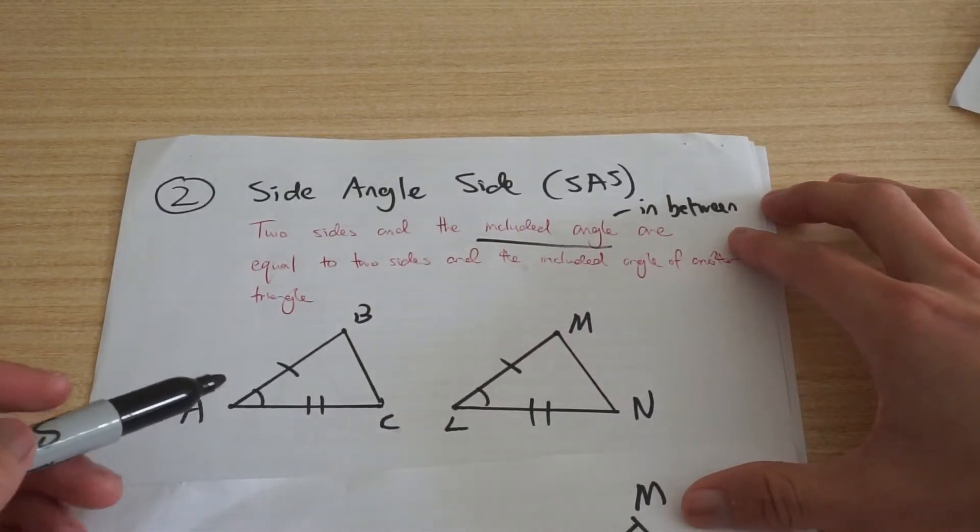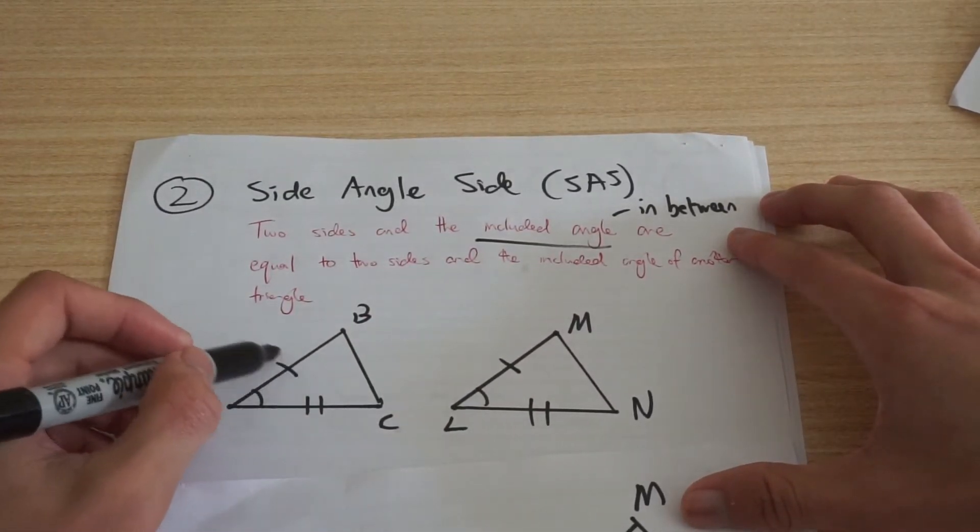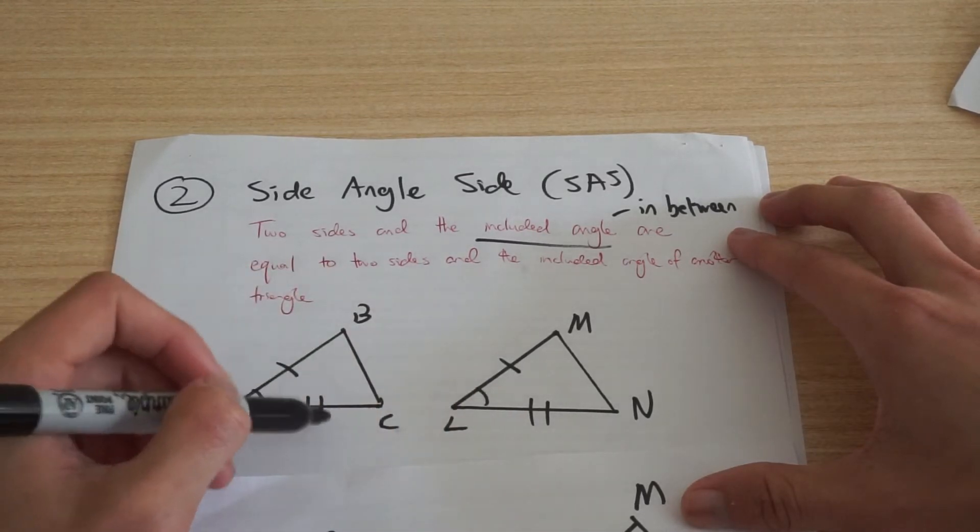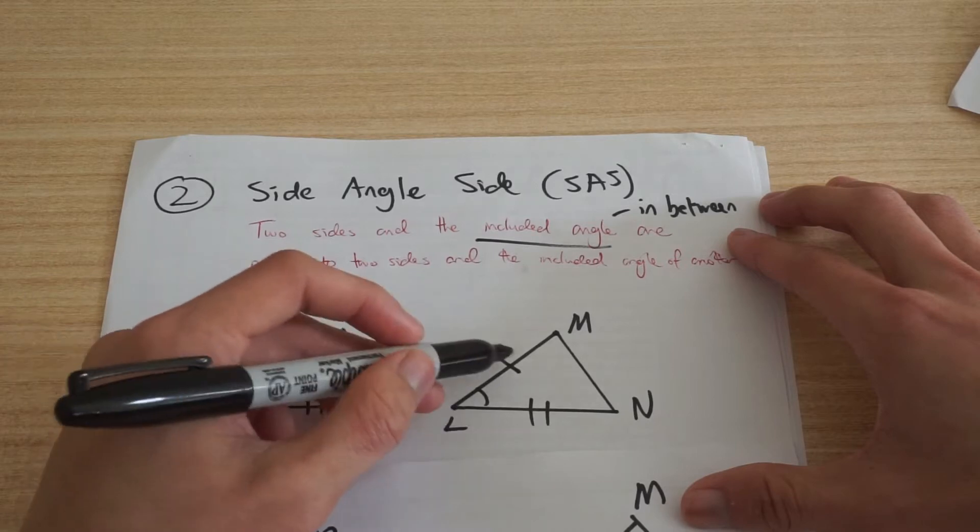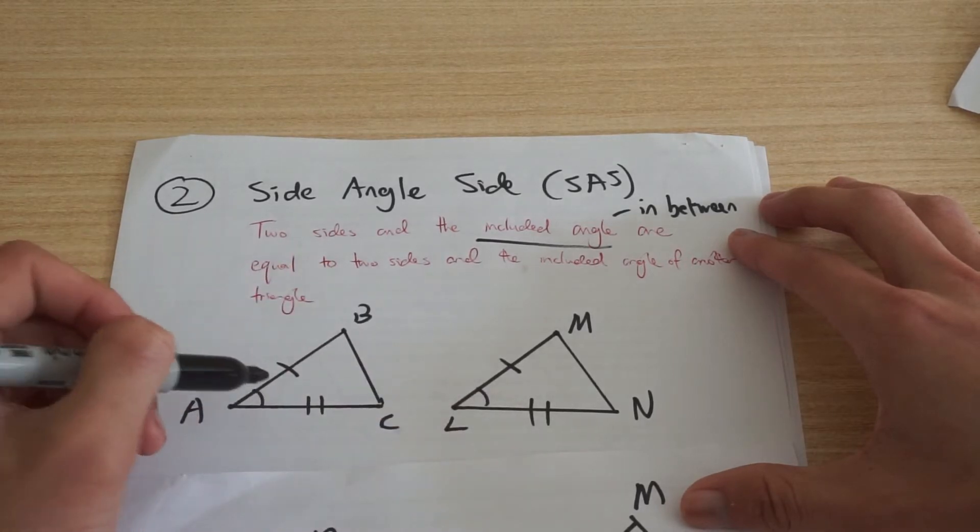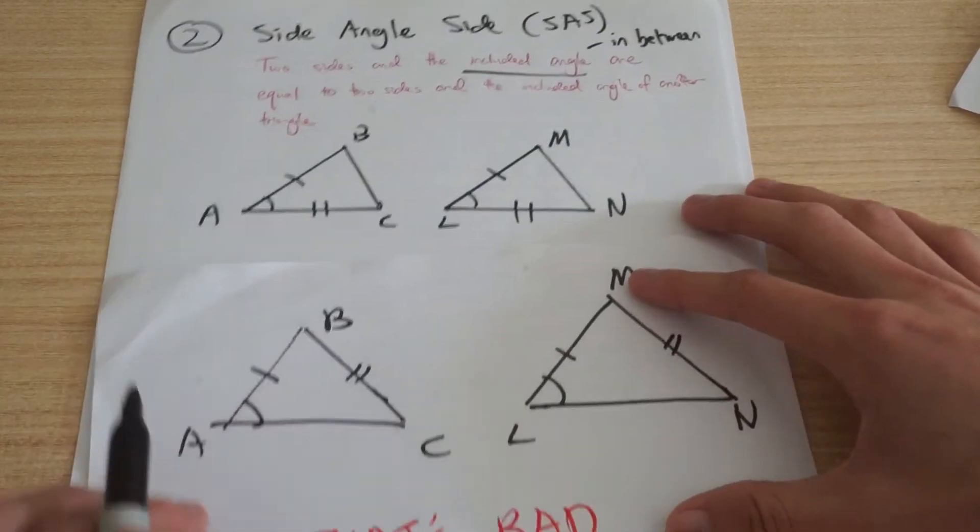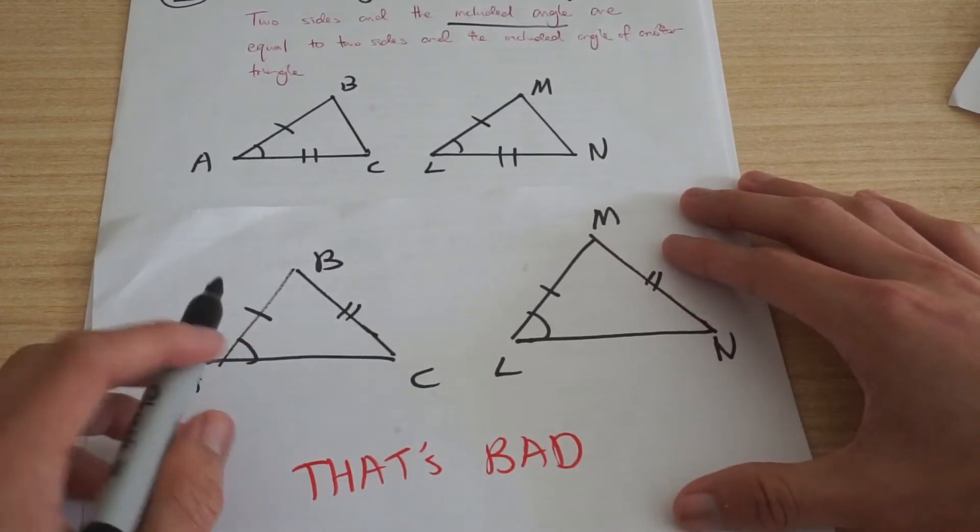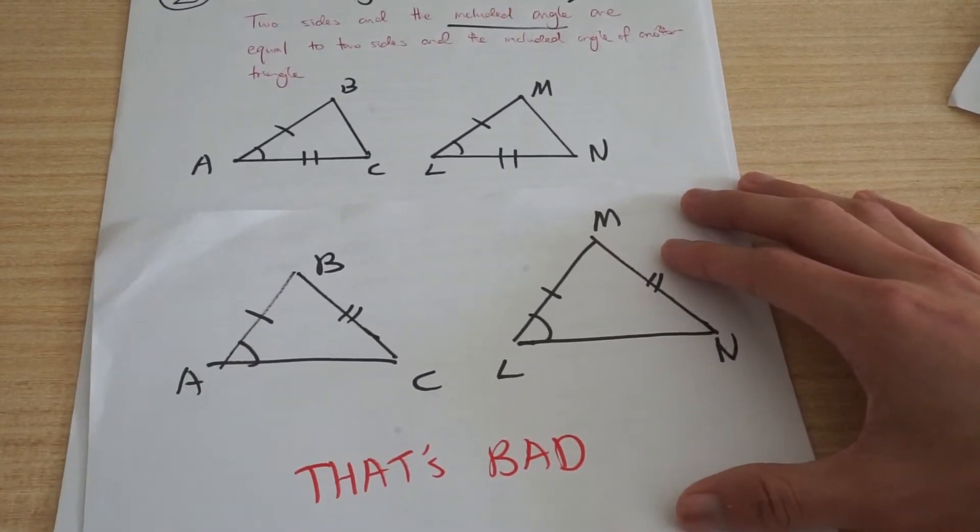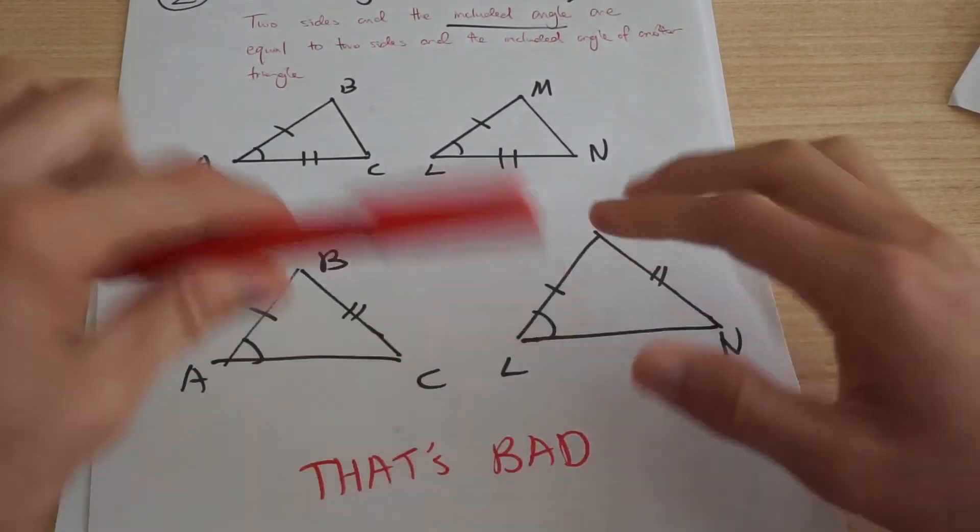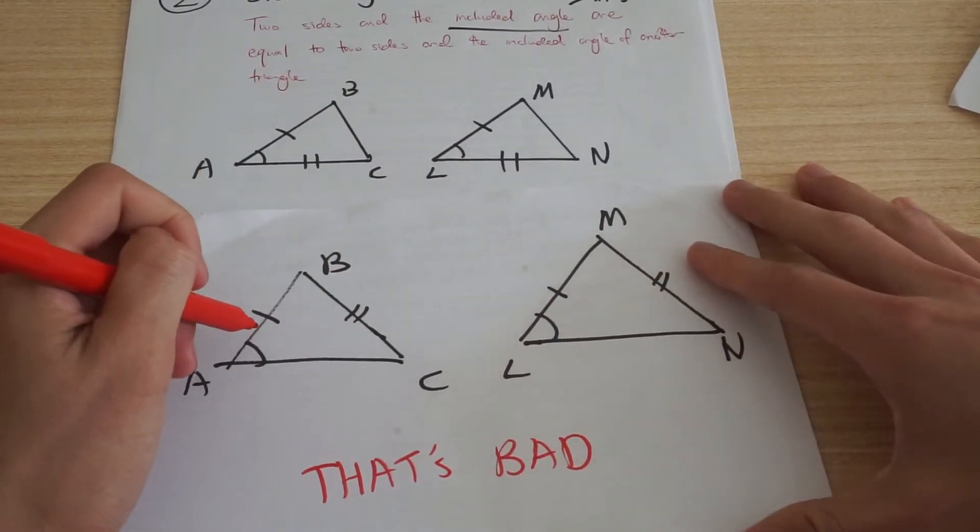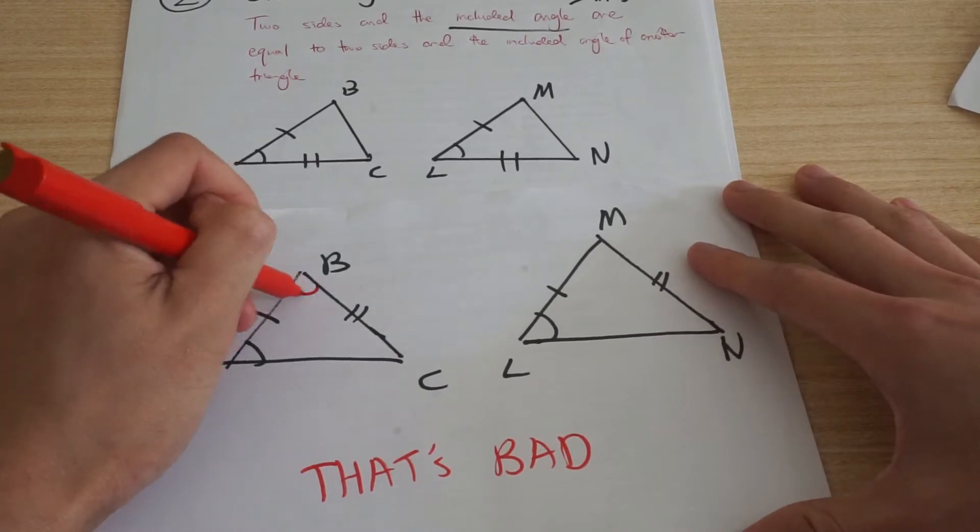So you look at this triangle here and you realize, okay, I'm given that these two sides are equal, but this angle in between the two sides is equal and that's important because if you have something like this where you can see that you're given two sides and another angle, you realize, hang on, well that's not the one in between. The one in between is this guy here.